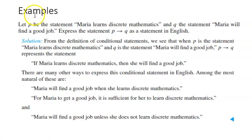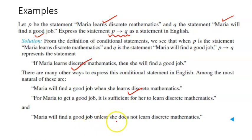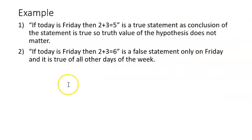Now consider this example: p is 'Maria learns discrete mathematics' and q is 'Maria will find a good job.' We need to express p implies q as an English statement. One way: 'If Maria learns discrete mathematics, then she finds a good job.' Other ways: 'Maria will find a good job when she learns discrete mathematics,' 'For Maria to get a good job, it is sufficient for her to learn discrete mathematics,' and 'Maria will find a good job unless she does not learn discrete mathematics.'